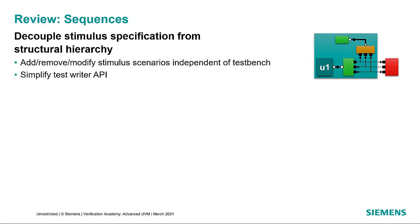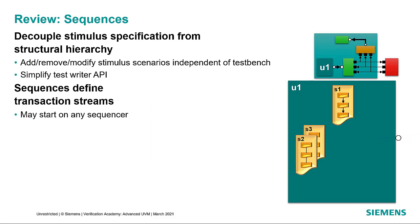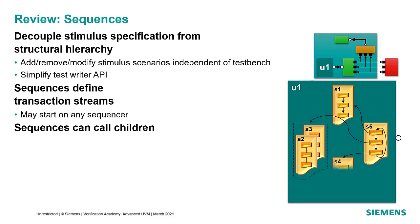We've already seen in Session 2 how the test can be used to tweak the factory and configuration settings, but a huge part of reuse comes from UVM's ability to encapsulate behavior in sequences. When combined with the factory and configuration, sequences let you specify different behaviors on a given test bench structure that still allow you to verify different aspects of the design functionality.